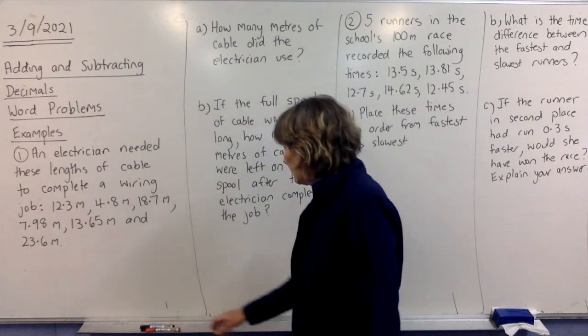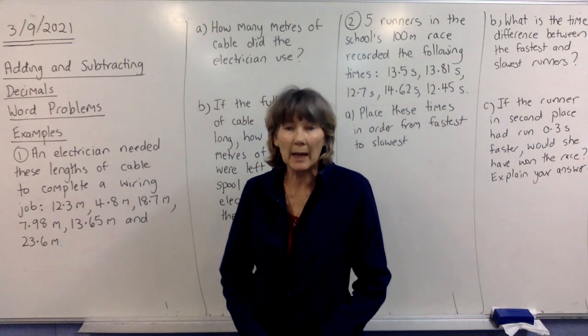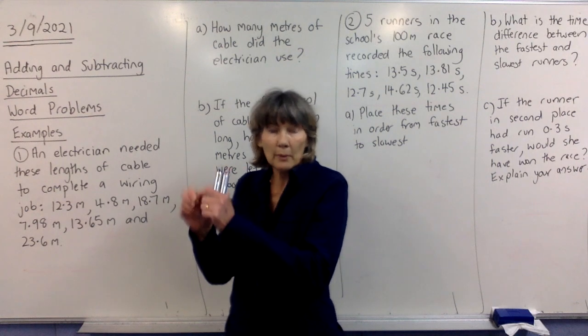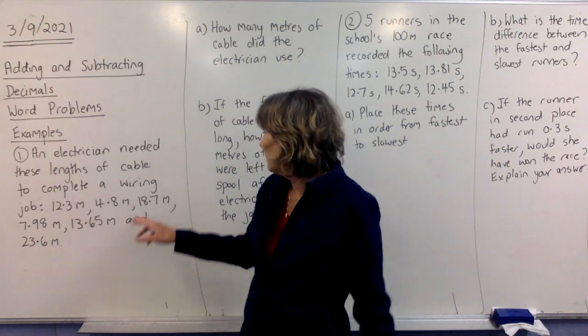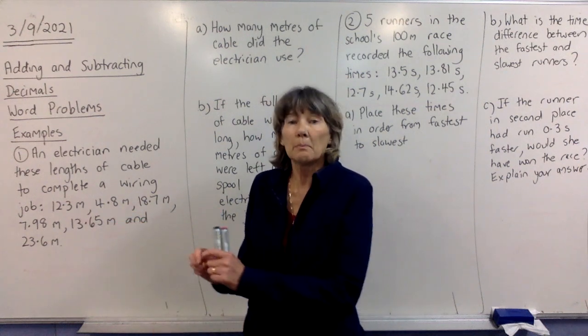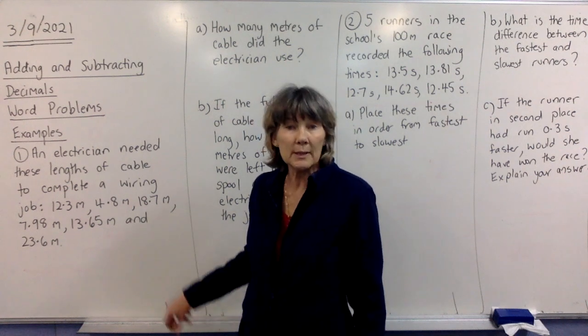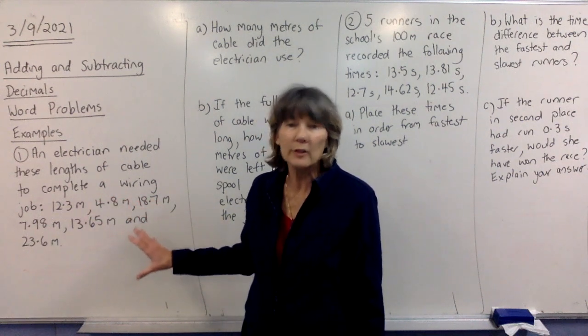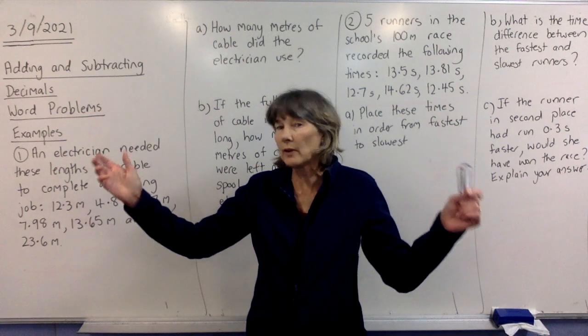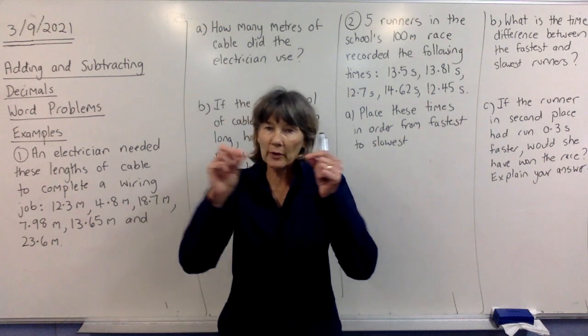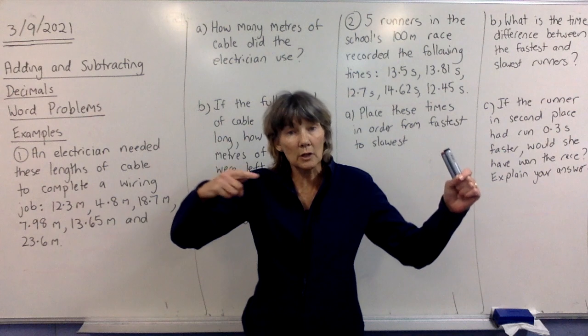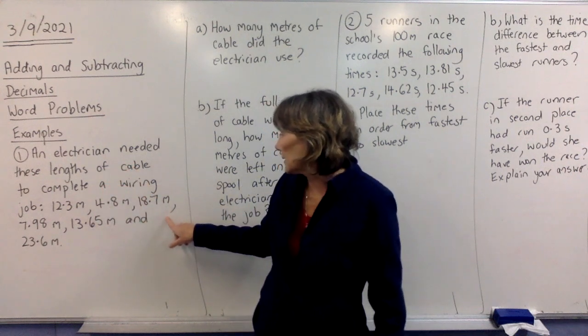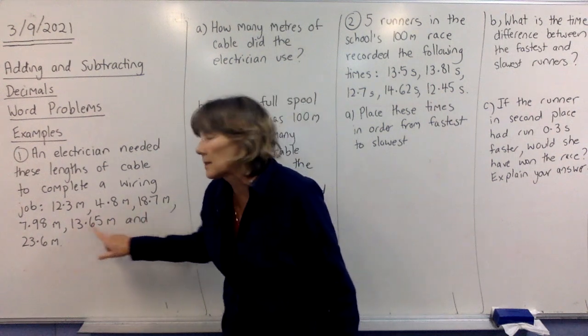All right, so let's have a look at this first question. So it says an electrician needed these lengths of cable to complete a wiring job. He needs 12.3 metres. All right, he might have been running a cable from a light switch to where the power comes from. 4.8 metres, that might have been another part that needed to be done for the TV area. 18.7 metres, that might have been to run from a light switch to the thing as well. So there's all these different amounts of cable, and you've seen electrical cable. If you've ever had an electrician in your place, you would have seen it's very thin wire. That's what they need. It's covered by something called a conduit so that the wires aren't exposed. All right, they need that cable. So all of these amounts, if you look at them, they're all in metres. All of them.